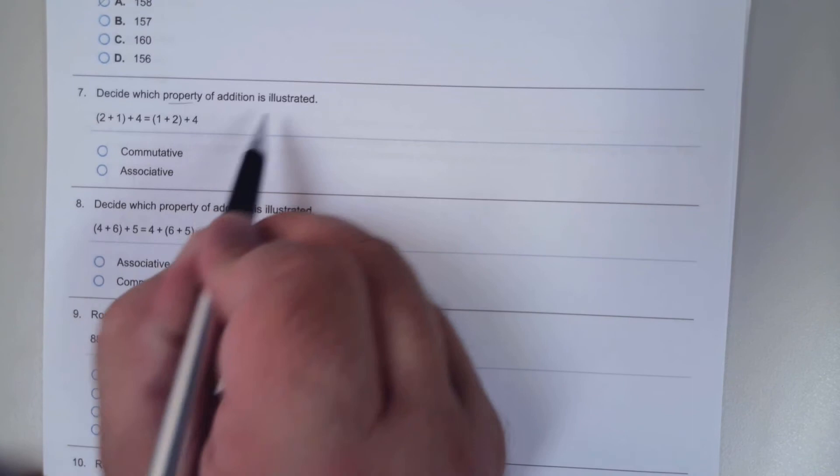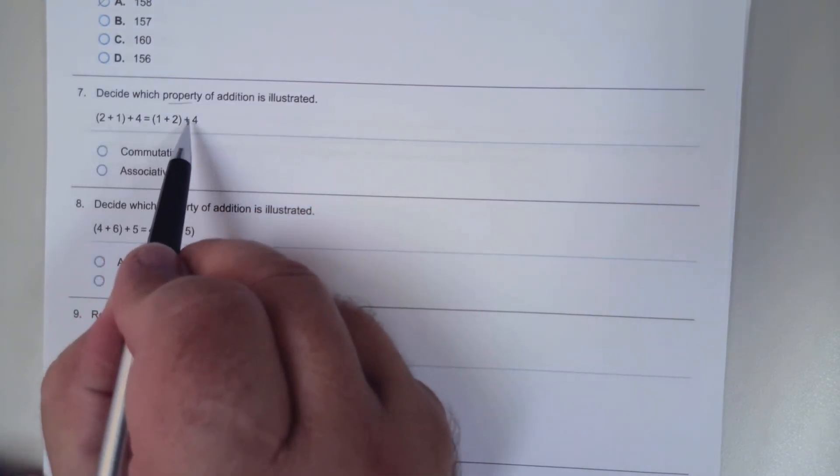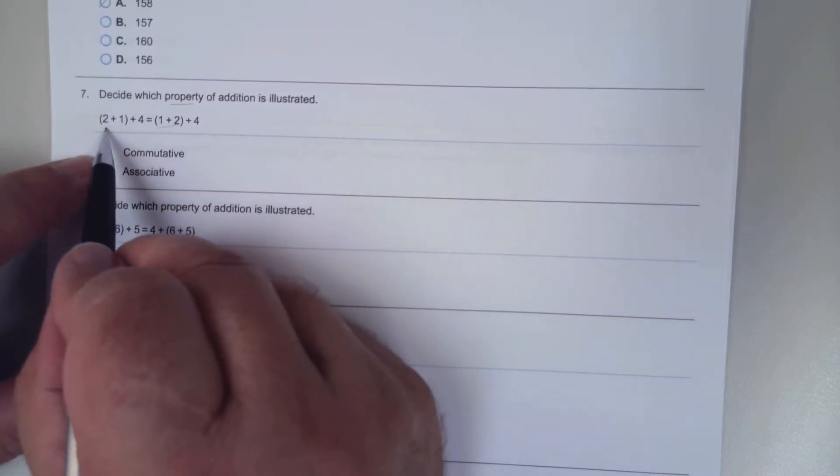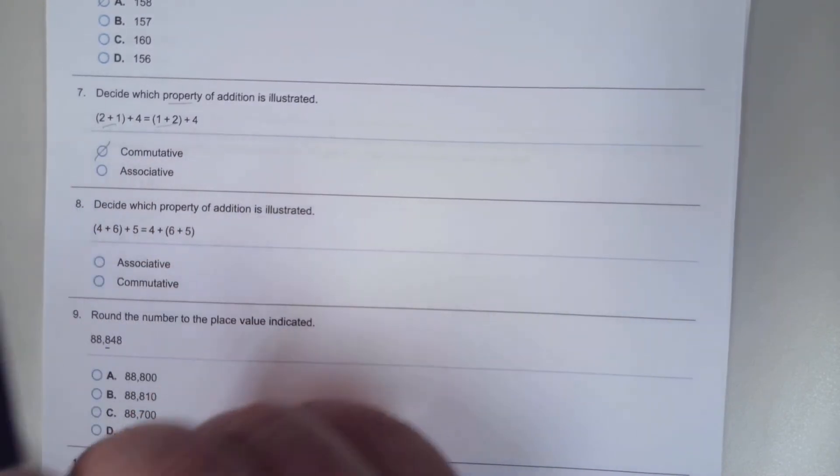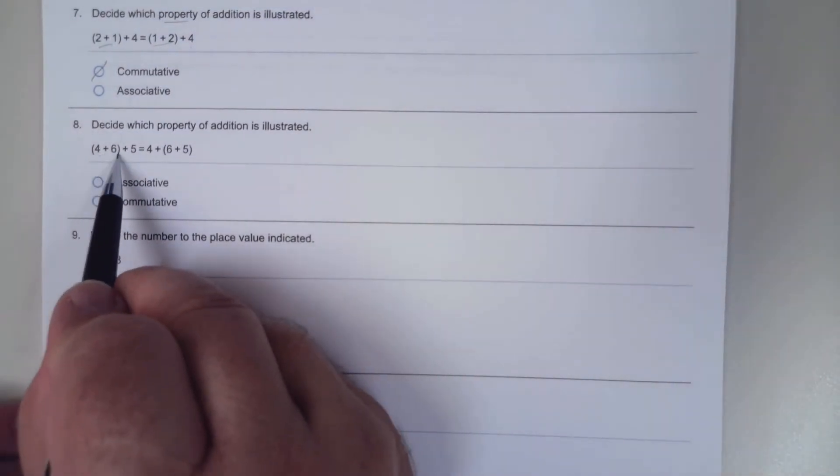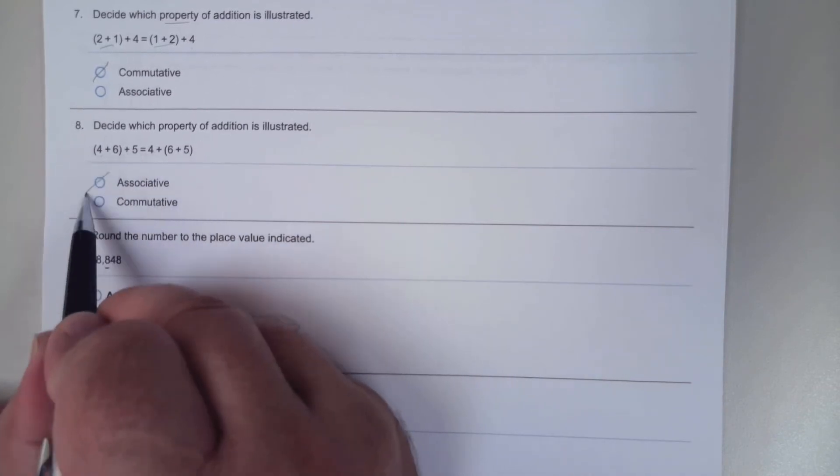Which property does this one illustrate? 2 plus 1 plus 4 versus 1 plus 2 plus 4. Well, the 4 is in the same place, these changed, so it's the commutative. Remember commutative means to move. 4, 6, 5 versus 4, 6, 5, the only thing that changes is the parentheses, so that's the associative.